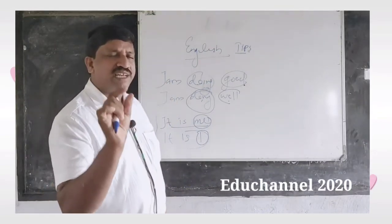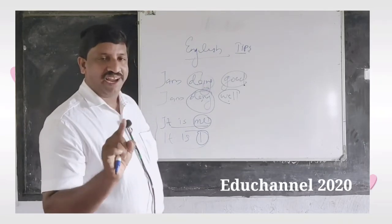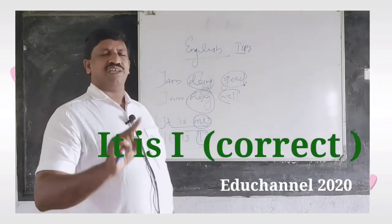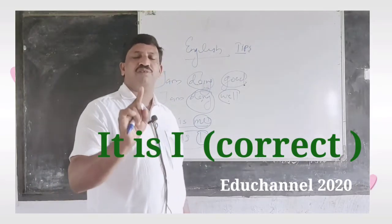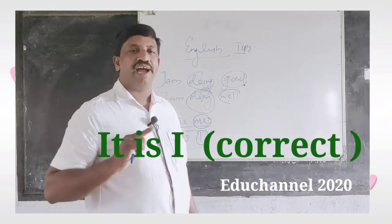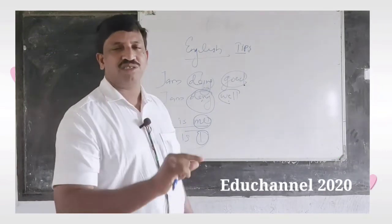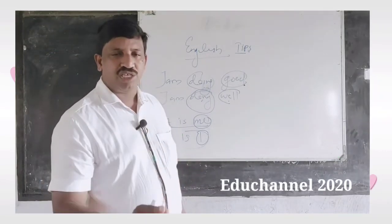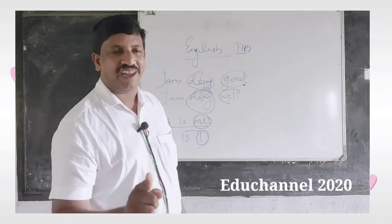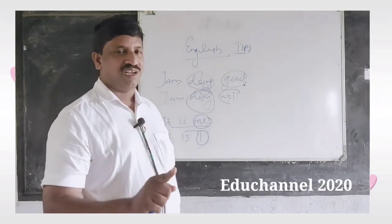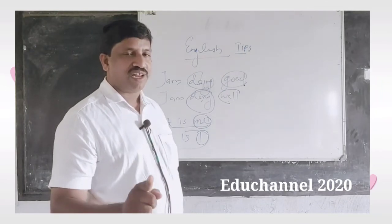When introducing yourself, the correct sentence should be 'It's I.' In everyday conversation we say 'It's me,' but that is technically considered incorrect. So in your English practice, you should say 'It's I' instead of 'It's me.' I hope you liked the video!